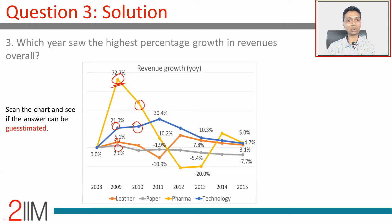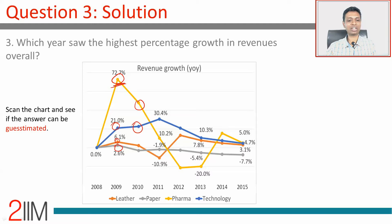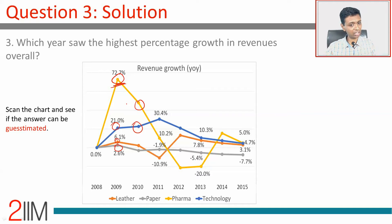All four divisions have grown at reasonably high growth rates in 2009 as well. So if you look at 2009 and 2010, you can already sense that the answer has to be between those two years, and within that, 2009 is clearly better. We need not have done any number calculations for this question. The 2009 data is off the chart, significantly higher than everything else. The only thing that comes close is 2010, and we can see clearly that the 2009 number is going to be greater than 2010 as a percentage growth rate.